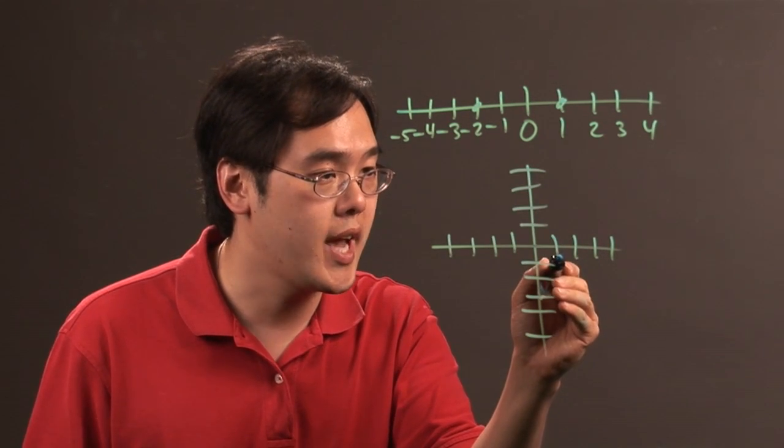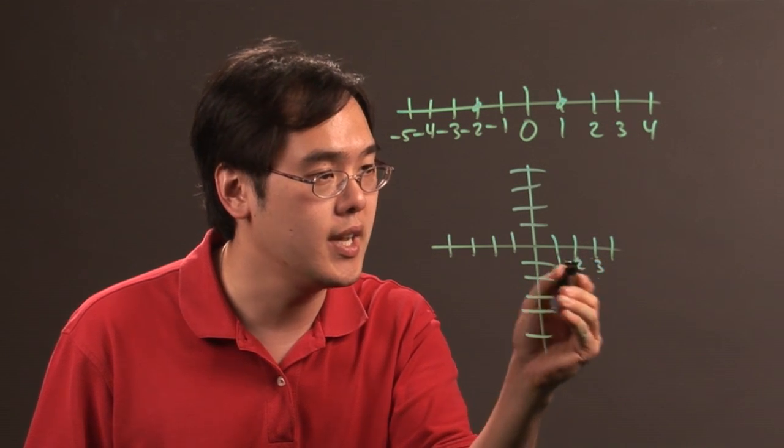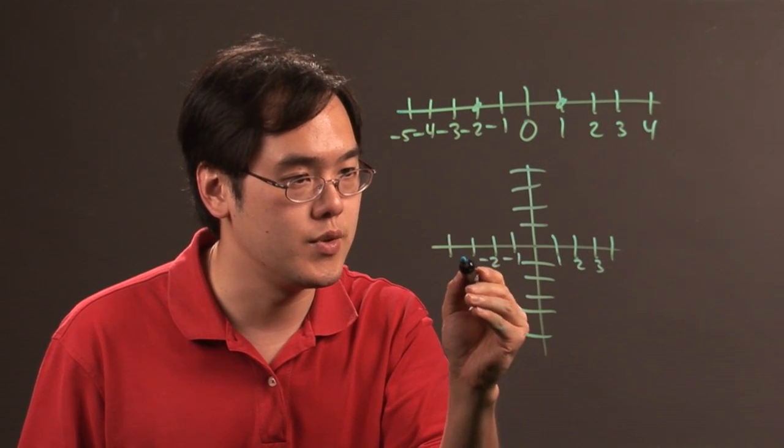you mark them as, for example, on the x axis, one, two, three, and so on and so forth, negative one, negative two, negative three.